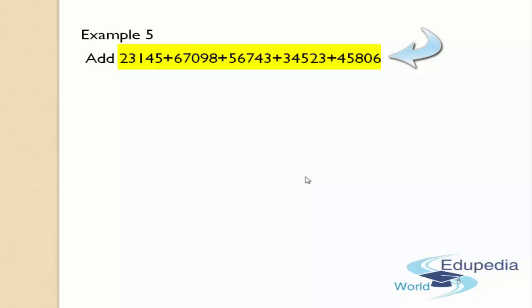Before going to add the numbers, whether they are of five digits, four digits, three digits, or different digits, first of all we have to set them in specific rows and columns by their place values, like this.